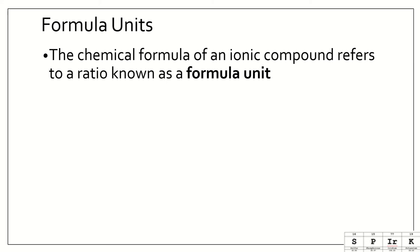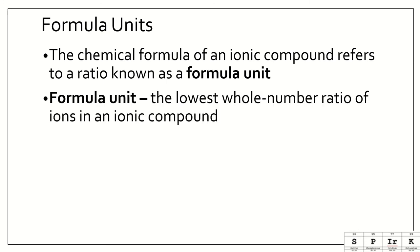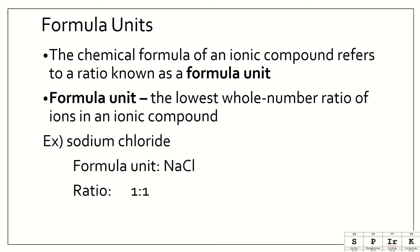So the chemical formula of an ionic compound refers to a ratio known as a formula unit. A formula unit is the lowest whole number ratio of ions in an ionic compound. So for example, sodium chloride, the formula unit is NaCl, and this is a one-to-one ratio. One sodium for every one chlorine.